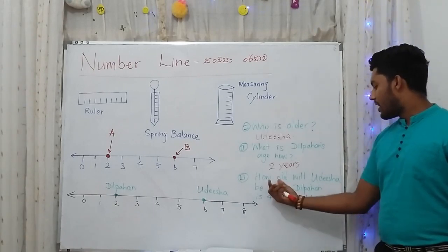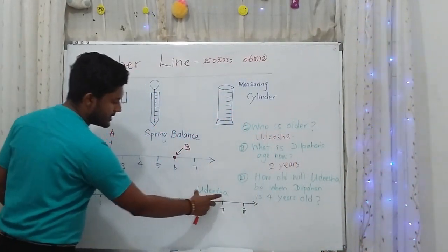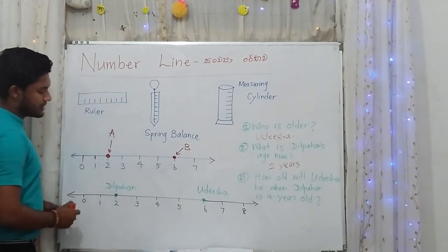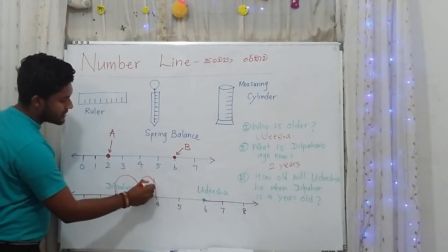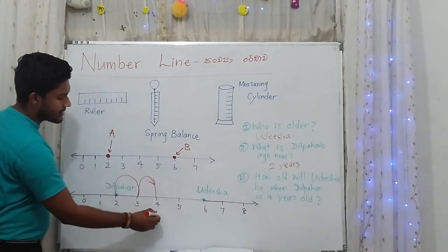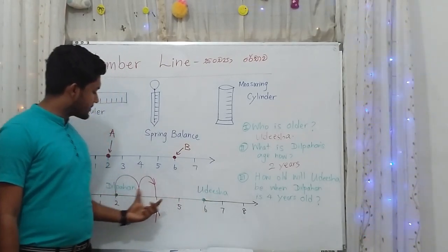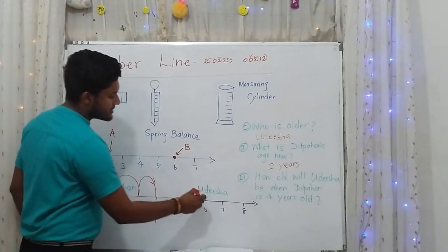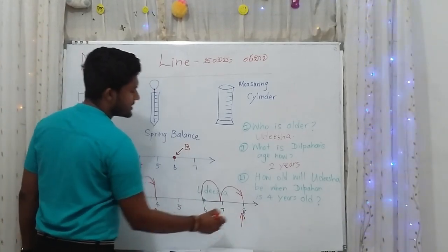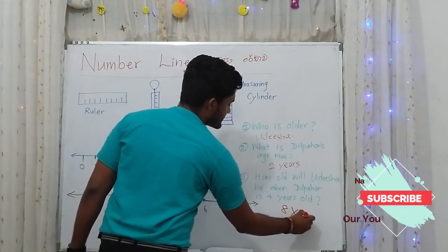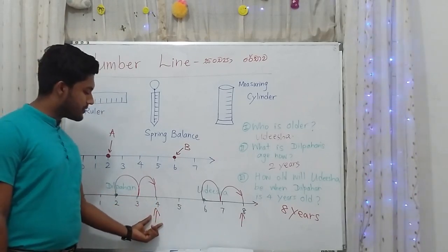The next question asks: how old will Udisha be when Dilpahan is four years old? When Dilpahan is four years old, Udisha's age will be eight years. This type of question can come in your exam.